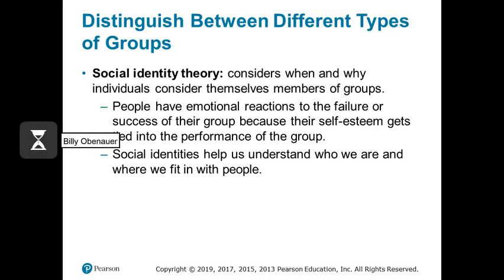Related to groups, social identity theory considers when and why people consider themselves part of a group and how they react to the success and failure of those groups. We often think of social identity theory within the context of culture, but people belong to many different groups they identify with — cultural groups, their organization, their industry, and so on.